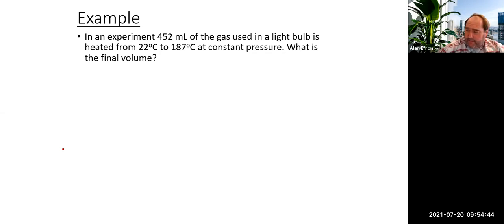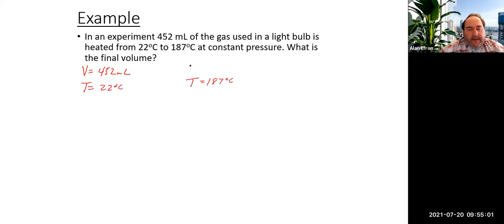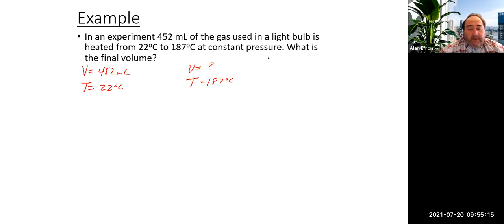Let's take a look. I'm going to pull out the information: 452 milliliters, which is a volume. It is heated from a temperature of 22 degrees Celsius to 187 degrees Celsius, and we are looking for a final volume. This should point you away from Boyle's Law because we have no pressures, and you can't use Gay-Lussac's Law either. So that moves us to Charles's Law.